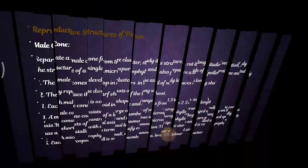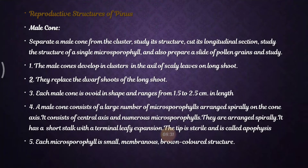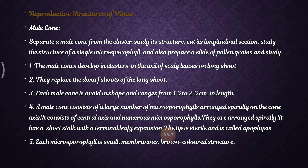Coming to the reproductive structure of Pinus: the Pinus plant is a diploid sporophyte with the dominant sporophyte phase. It reproduces by spores, and cones are the asexual reproductive structures. Pinus is monoecious and unisexual — the male and female cones are produced on separate branches of the same plant.